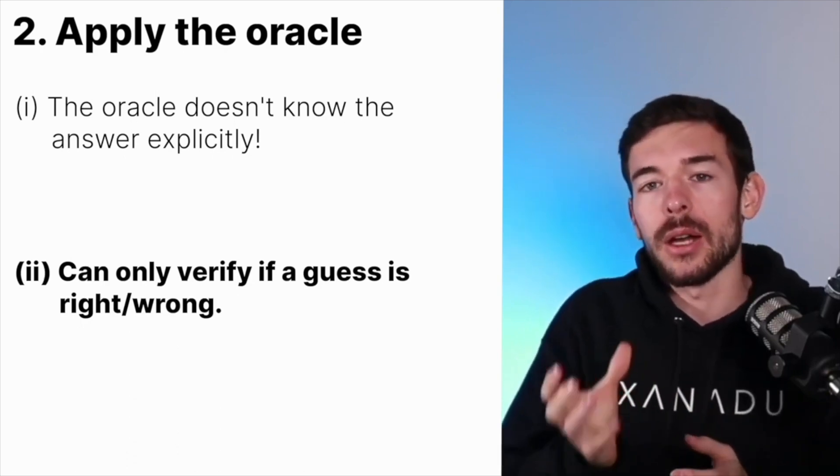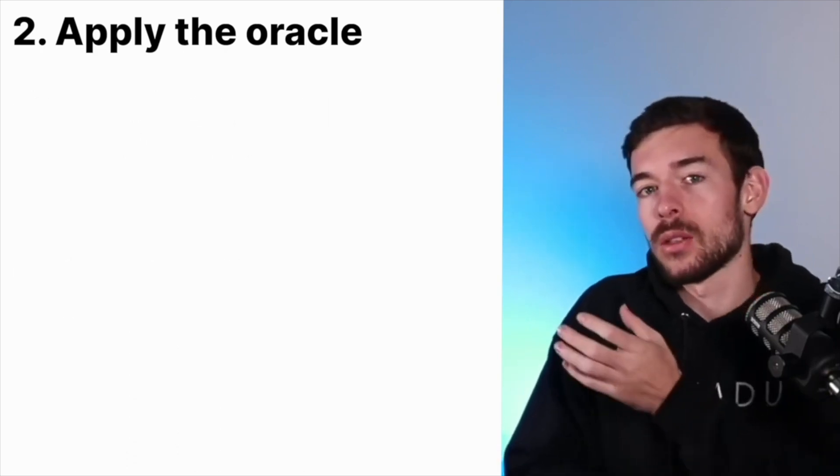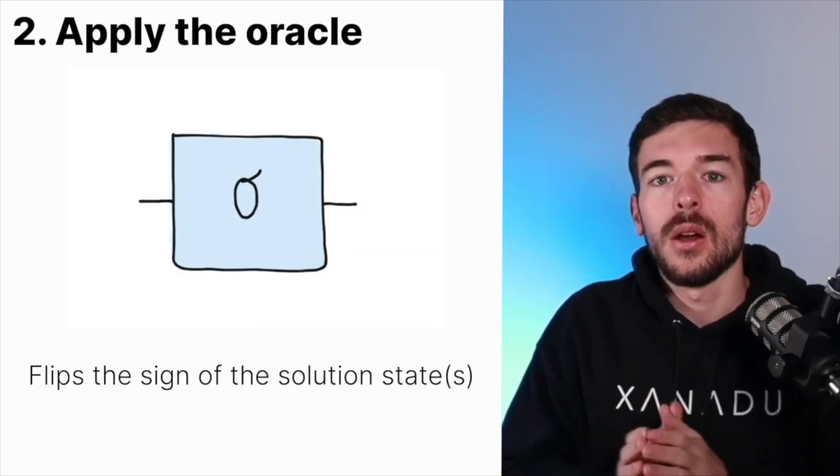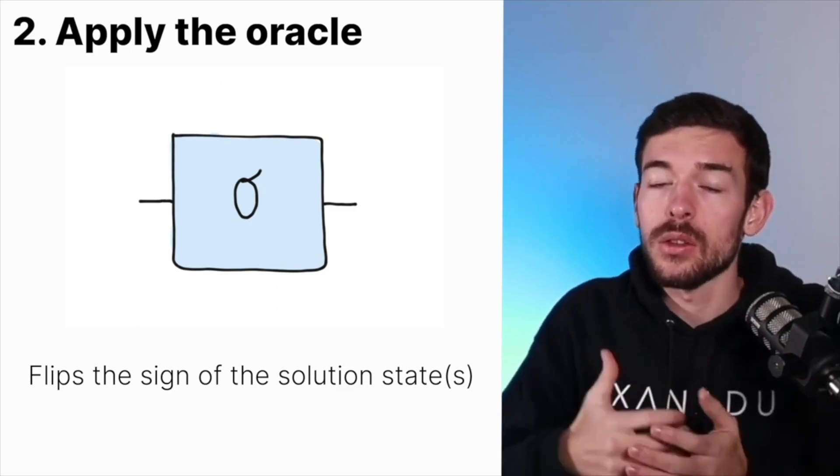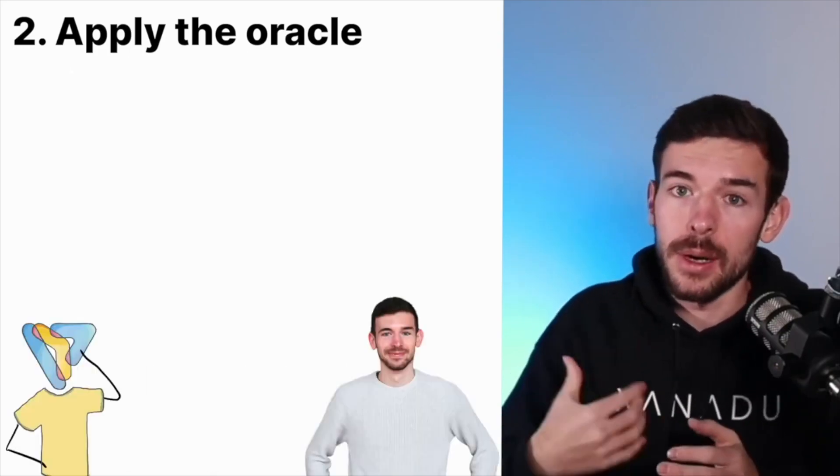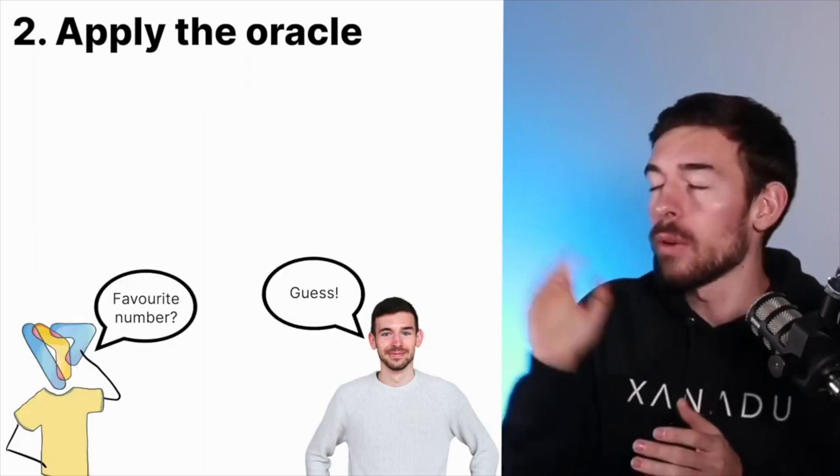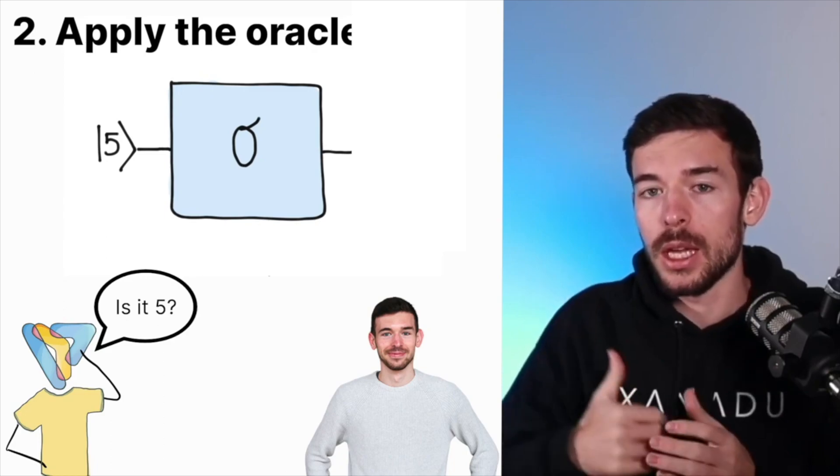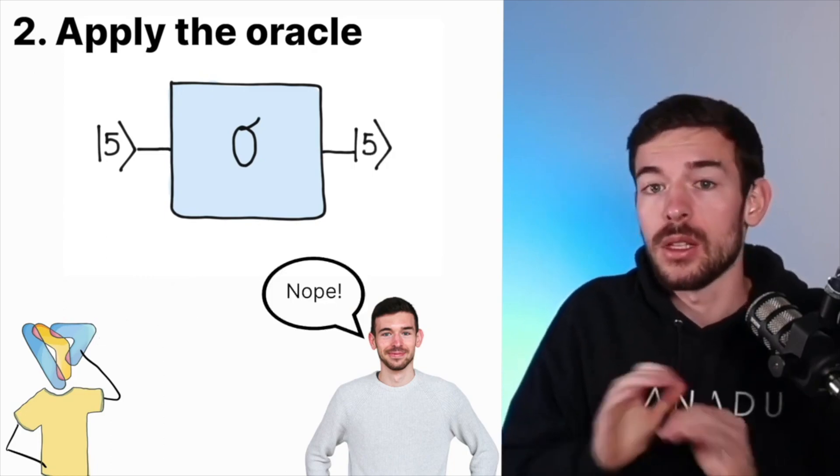Actually, this oracle, this operator, let's call it O, what it's going to do is flip the sign of the elements that it considers a solution. For example, in our number selection, if we have number 5 and we apply the oracle, the output is going to be 5 because this was not a solution.